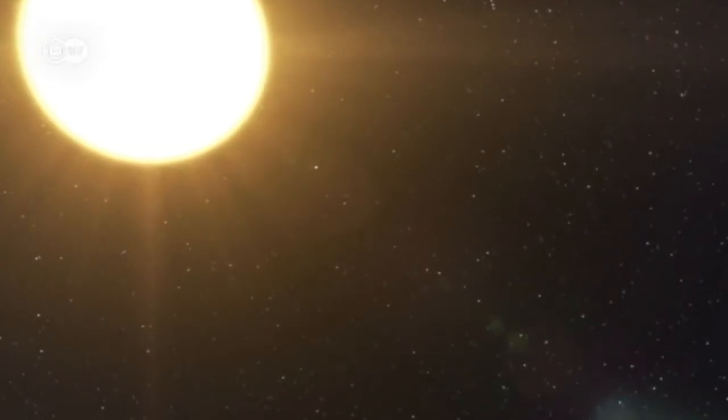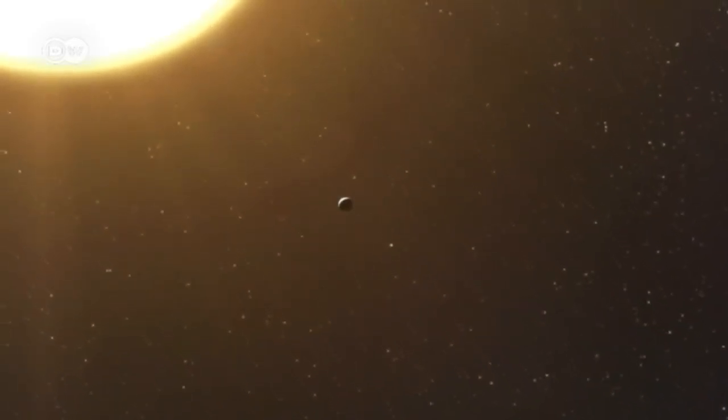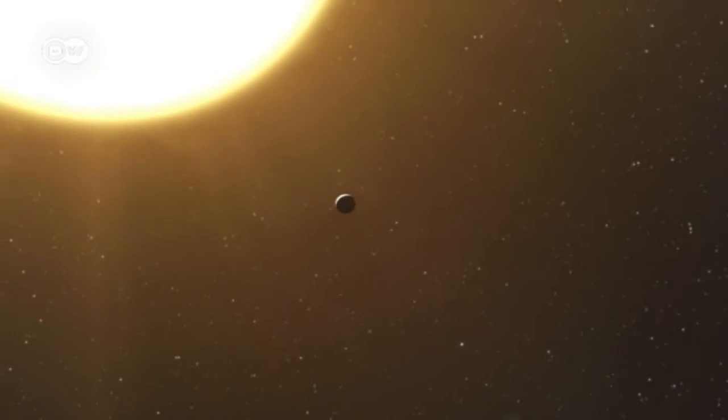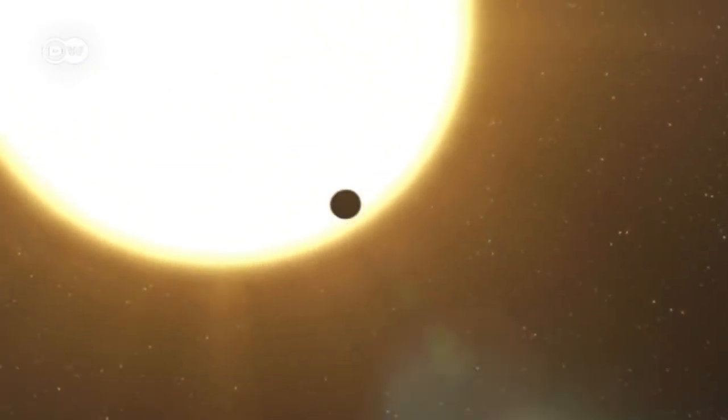Small rocky planets like Earth can only be discovered from space as they pass in front of their sun.